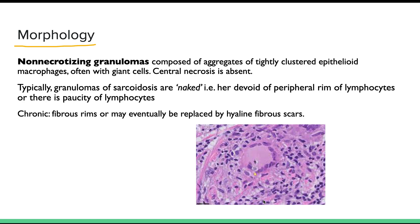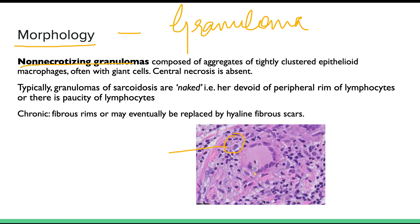The main morphological characteristic of sarcoidosis is the granulomas. These granulomas are slightly different from those seen in tuberculosis. They are non-necrotizing granulomas, with epithelioid cells present. The epithelioid cells are formed from macrophages, which change into slipper-shaped cells known as epithelioid cells.